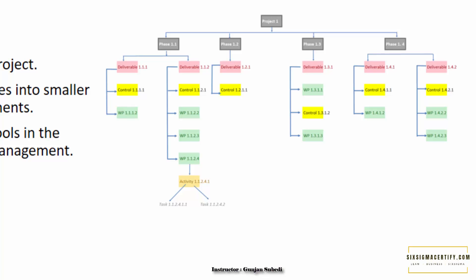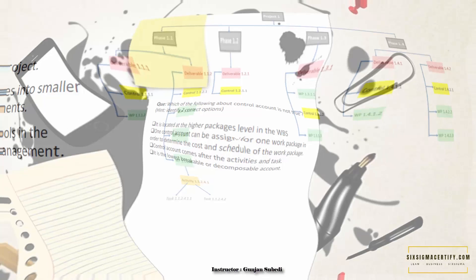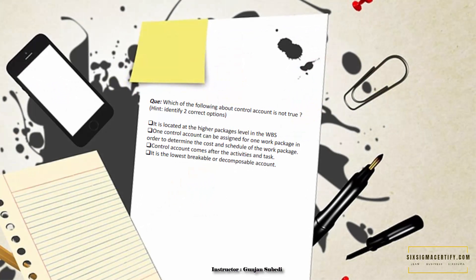Each work package in the WBS is assigned only one control account, shown in yellow in the diagram. We can get important information about milestones, cost, and schedule allocated through the control account. Whenever we want to learn about any work package, we look for its corresponding control account. The control account may cover one or more work packages and can be used to estimate cost, schedule, and scope.